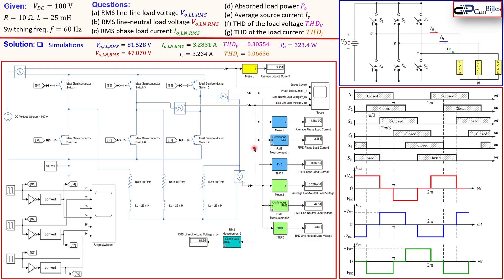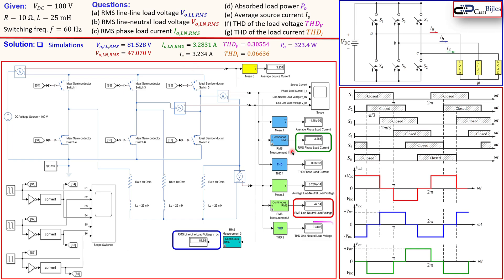Looking at the results one by one: the RMS line-to-line load voltage from simulation is 81.65 V, very close to our calculated 81.53 V. The RMS line-to-neutral load voltage is 47.070 V, close to our 47.04 V — the small error is because we stopped at n=101 rather than infinity. The RMS phase load current and the THD values for both load voltage (≈0.31) and load current (0.06637) all match very closely with the calculated values.